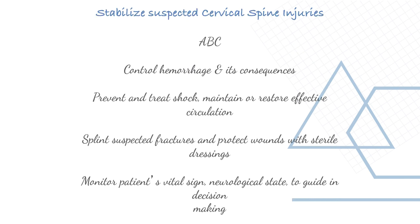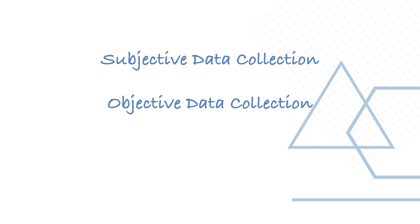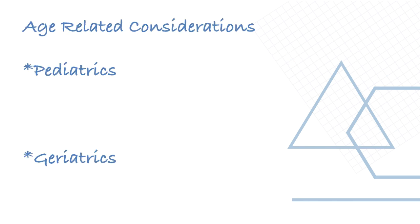In review: stabilize suspected cervical spine injuries; follow the ABCs; control hemorrhage and prevent intrinsic shock; maintain or restore effective circulation; splint suspected fractures; protect wounds with sterile dressings; monitor patient's vital signs and neurological state to guide decision-making. Subjective and objective data collection are necessary. Consider special age groups — pediatrics and geriatrics. Thank you for watching; please subscribe, share with your friends, and turn on bell notifications.